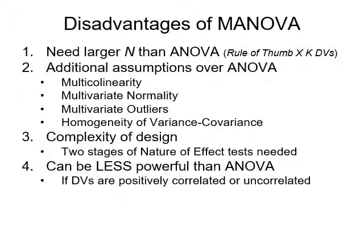Another disadvantage of MANOVA is its complexity — it requires two stages of nature-of-effects testing. We have to look at an omnibus test and then a second omnibus test. So the Wilks Lambda MANOVA itself is an omnibus test of everything, but if that's significant, we're now doing ANOVA omnibus F-tests to find out if we can continue, and if those are significant we're following up with even further tests.